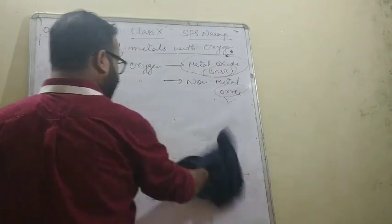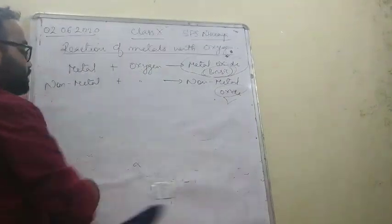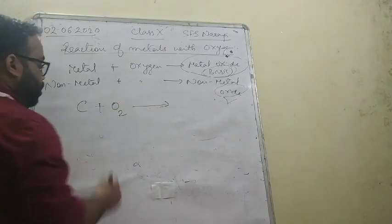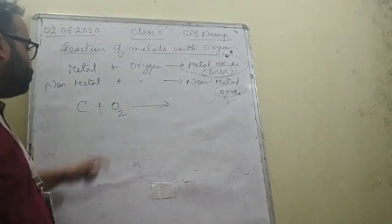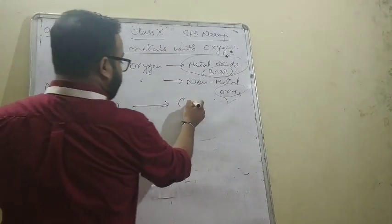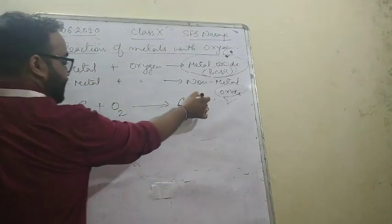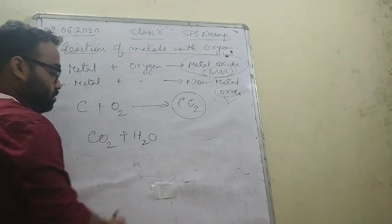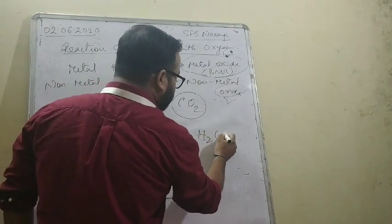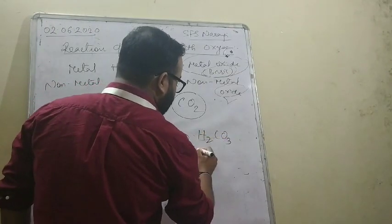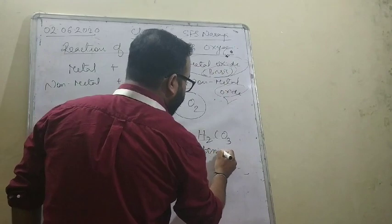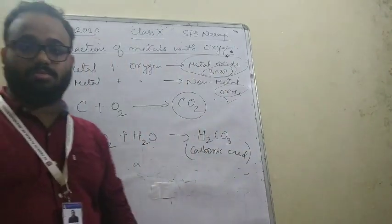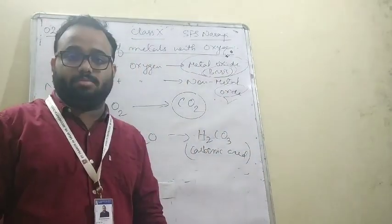You can see the acidic nature by this example. Take non-metal plus oxygen: carbon plus oxygen gives you carbon dioxide, which is acidic in nature. Because carbon dioxide plus water gives you H₂CO₃, which is nothing but carbonic acid.